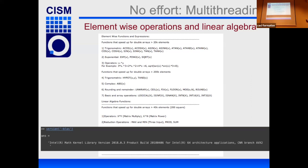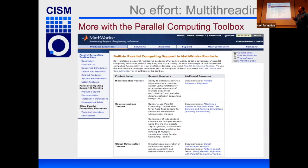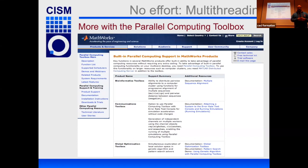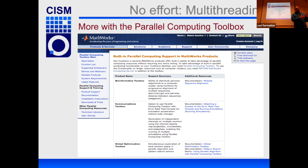Beyond the built-in parallelism, there is the Parallel Computing Toolbox. It's a kind of magical toolbox that provides parallelized versions of functions from other toolboxes — for example the Statistical or Bioinformatics toolboxes. Many functions become parallelized when the Parallel Computing Toolbox is also active. However, it requires an additional license.